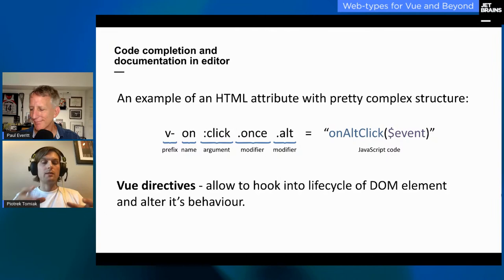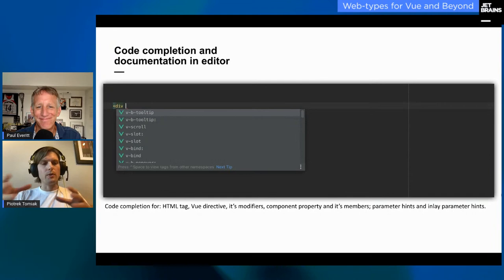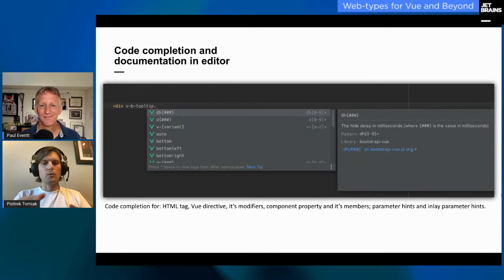This structure is common to all directives. Some of them, like v-on, provide modifiers and arguments. Some are just simple without any arguments and modifiers. The directive, through the attribute value, receives some JavaScript code. Having such a complex structure, it is a challenge to provide good code completion within the IDE.